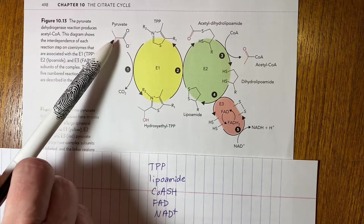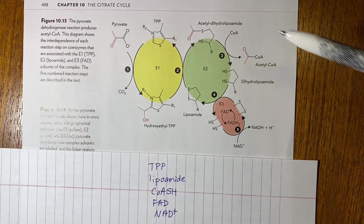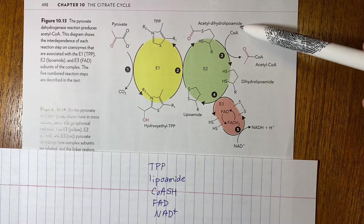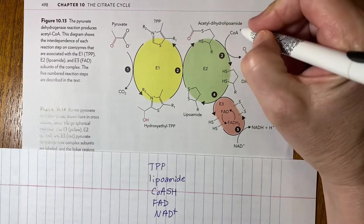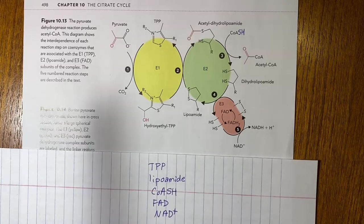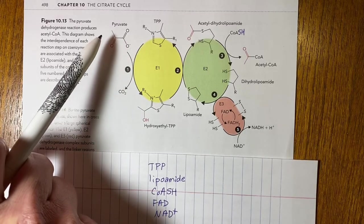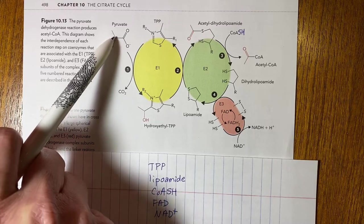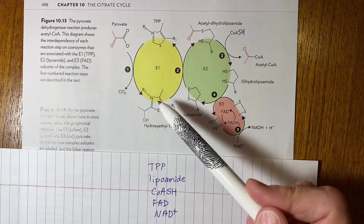Here's the substrate pyruvate and then another co-substrate is this coenzyme A which is over here. I'm just going to put the SH here just so it looks more like what I have written down.